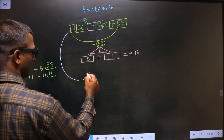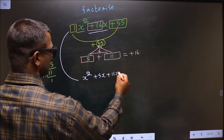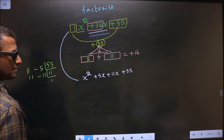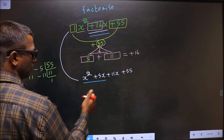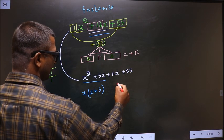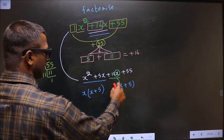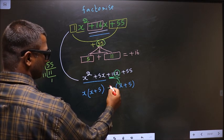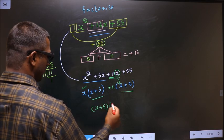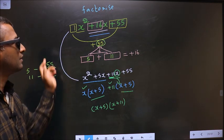In place of plus 16x, you now write plus 5x plus 11x plus 55. From the first two terms, x is taken out as common, leaving x plus 5. From the last two terms, 11 is taken out, also giving x plus 5. Taking x plus 5 as common, you are left with x and plus 11. So the final answer is (x + 5)(x + 11).